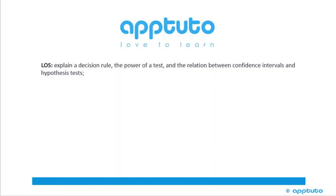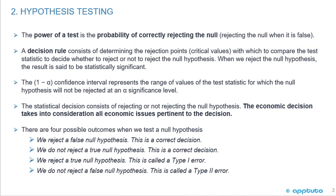This LOS explains a decision rule, the power of a test, and the relation between confidence intervals and hypothesis tests. The power of a test is the probability of correctly rejecting the null, rejecting the null when it is false.